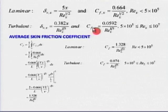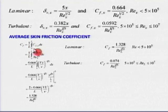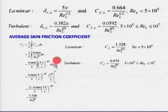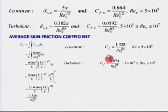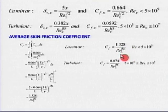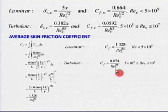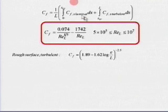To get the average friction factor over length L, integrate: C̄f = (1/L)∫₀ᴸ Cf_x dx. For laminar flow, substituting Cf_x = 0.664·Re_x^(−½) and integrating gives C̄f = 1.328·Re_L^(−½). For turbulent flow, integrating gives C̄f = 0.074·Re_L^(−1/5). For a plate with mixed laminar and turbulent flow, integrate Cf_x(laminar) from 0 to x_cr and Cf_x(turbulent) from x_cr to L.